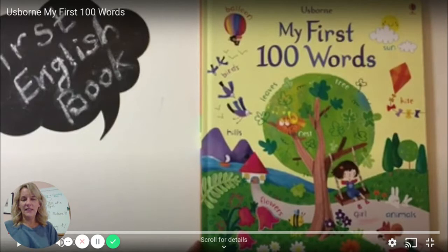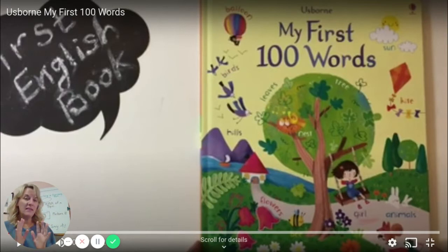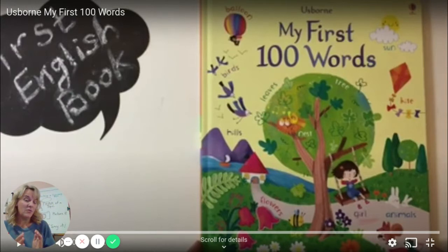Well today I want to show you a book that has two pages and on those two pages they have a lot of things, a lot of pictures on those two pages but they're kind of all about one thing. They're one type of picture and that's called a topic.